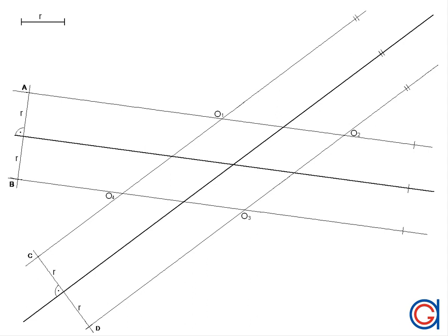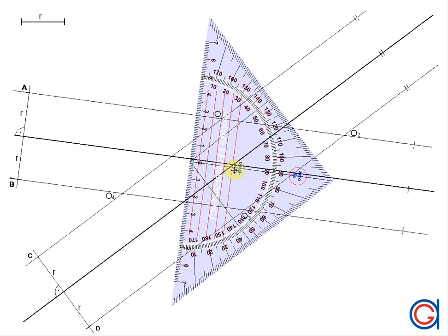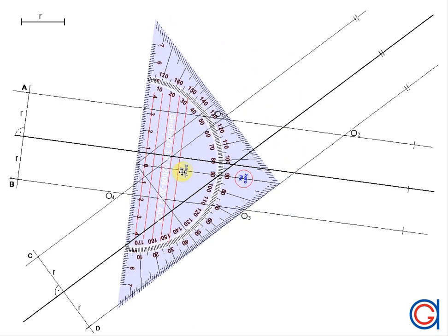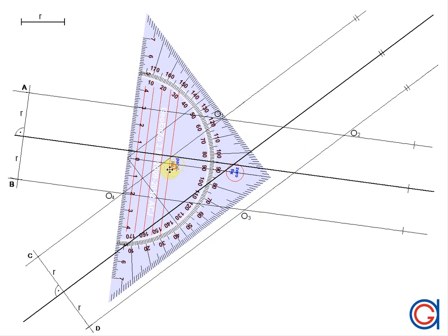Where these parallel lines intersect each other, we obtain four new points — the four center points of the four circles that we want to draw. So O1, O2, O3, and O4, as you can see here.